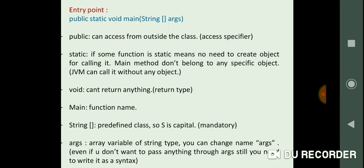Now the next point is String and the brackets. It is a predefined class. As it is a predefined class we need to write the S as capital, so it is very mandatory to write S as capital. And the last is args. Args is an array variable of string type. You can change the name of args. Even if you don't want to pass anything through the args, still you need to write it as a syntax. This is the basics of Java.